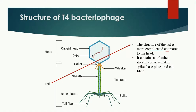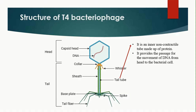The tail is a more complicated structure compared to the head, consisting of many components: tail fiber, base plate, sheath, collar, whisker, tail tube, and spike. The tail tube is an inner non-contractile, rigid tube made up of protein — similar to a syringe. Its purpose is to provide a passage for DNA to travel from the head to the bacteria.